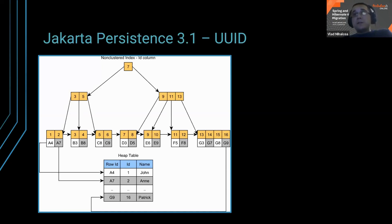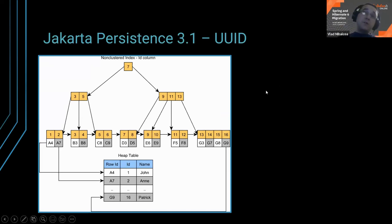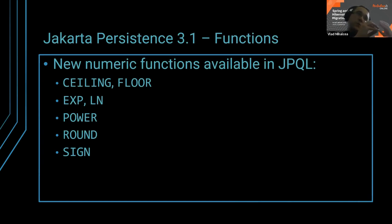Using a sequence is almost always much better. Or use something that's time-sorted, like time-sorted identifiers — there are many solutions, one you can find in the Hypersistence Utils open source project. Keep in mind: every time you have a new feature, think about whether it's really going to be useful from multiple points of view, not just one.